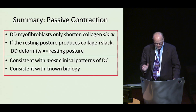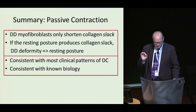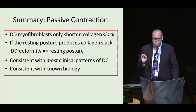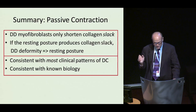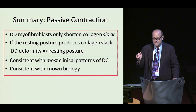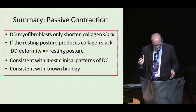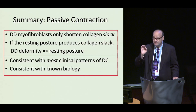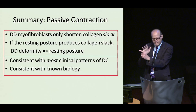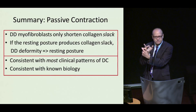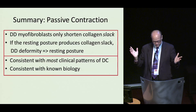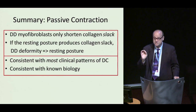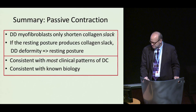In summary, Dupuytren disease myofibroblasts are unique in that they primarily reduce collagen slack. If the resting posture produces collagen slack, as it does in the palm, then the deformity follows the resting posture. This is consistent with the vast majority of Dupuytren contracture patterns — you don't get contracture pulling the finger sideways from myofibroblasts going wild. It's consistent with the known biology of periodic contraction, and that's my case.